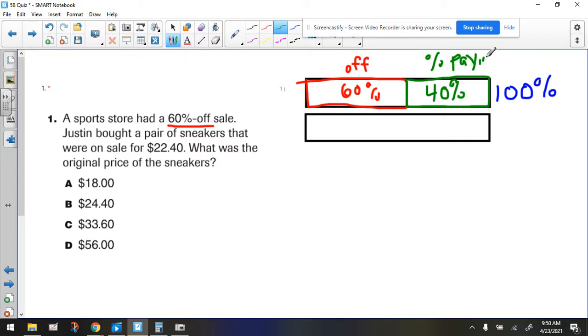Alright, so let's look again at the other number that's given and see if we can figure out where does that go for the money, because the bottom bar is going to be talking about money. Is the number that's in the problem, is it the discount, is it the sale price, or is it the full price of the sneakers?